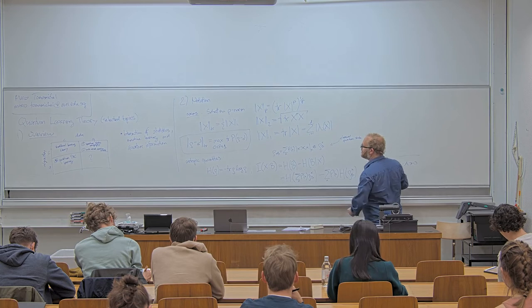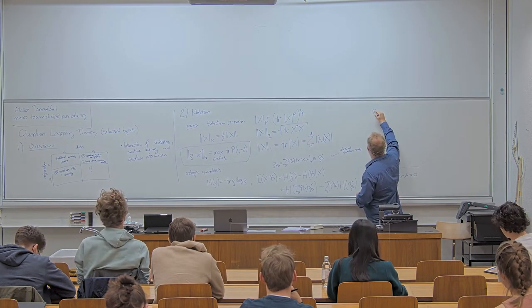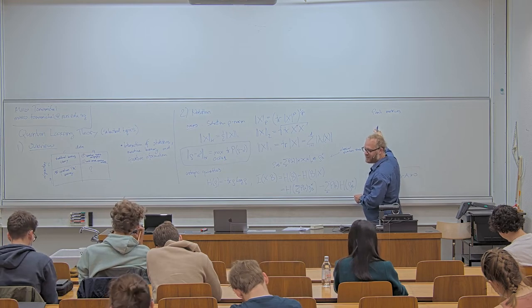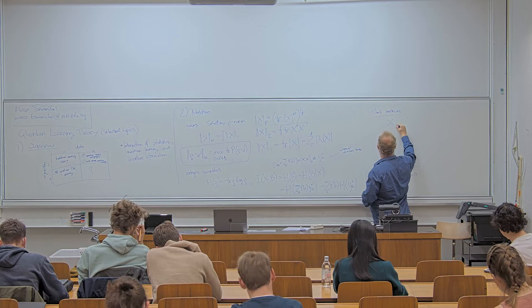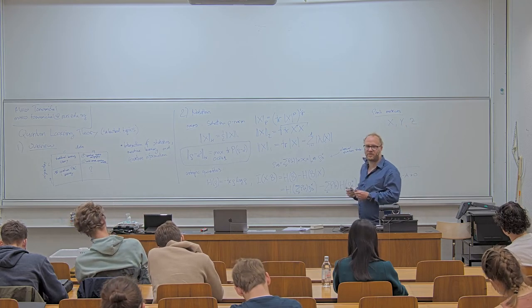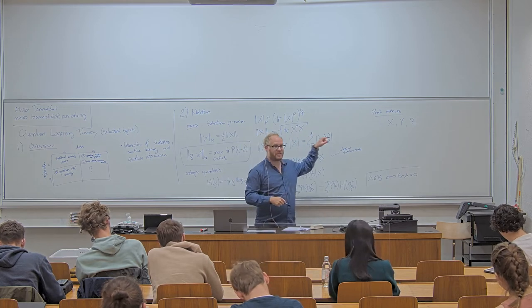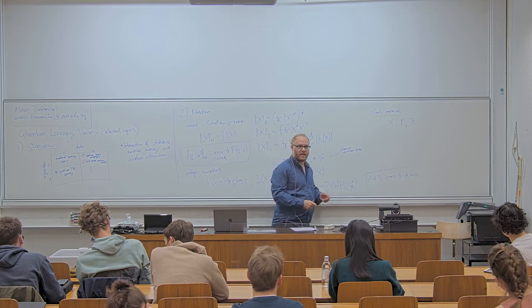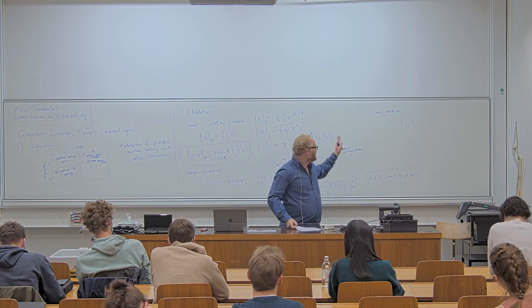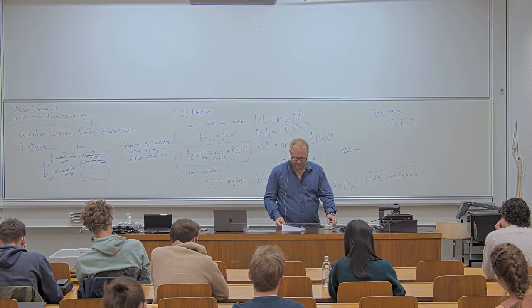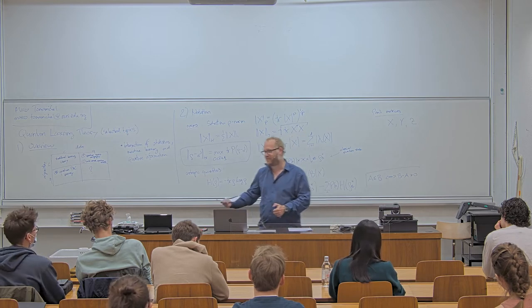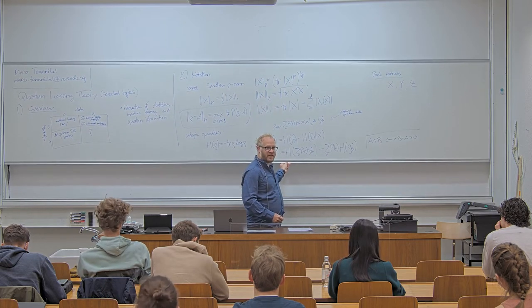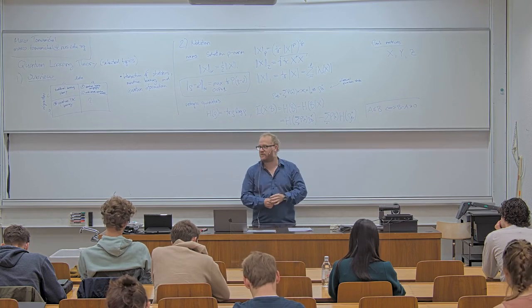The final notation: the Pauli matrices, which I hope you're very familiar with. I'm going to call them X, Y, and Z — sometimes written σ_x, σ_y, σ_z — but I'll use the shorter notation since I'll write them so often. I hope I don't need to write down what these matrices are; otherwise let me know. If other things come up, just ask — I'm happy to explain more.